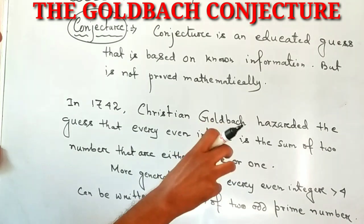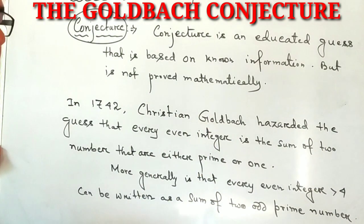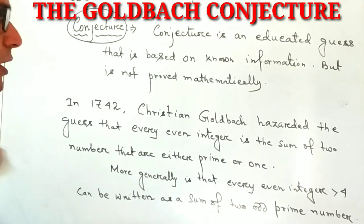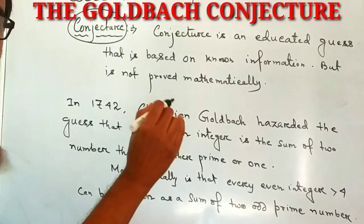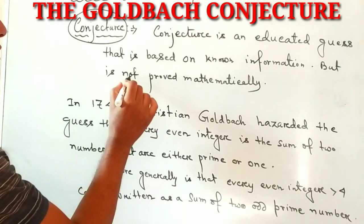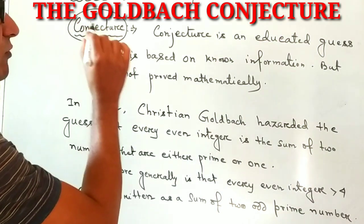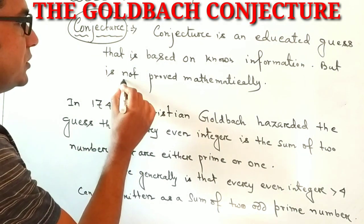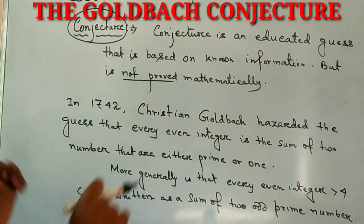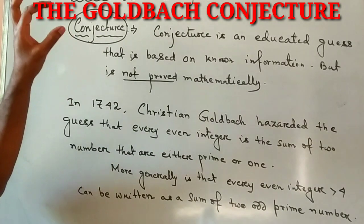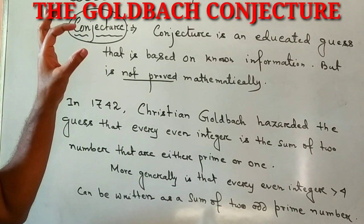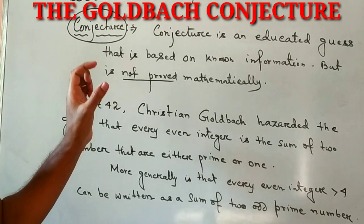From some known information, we make an educated guess. But it is not proven mathematically. So the proof of the Goldbach Conjecture has not been given — not yet proved. The conjecture is only an educated guess from known information.